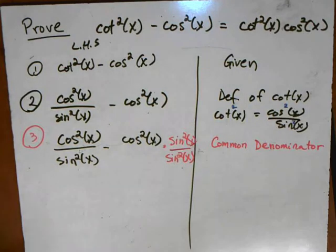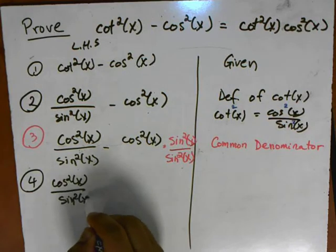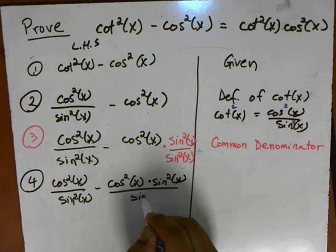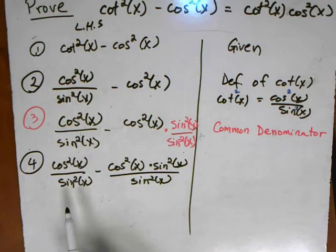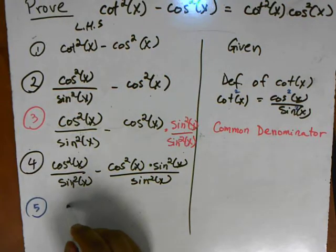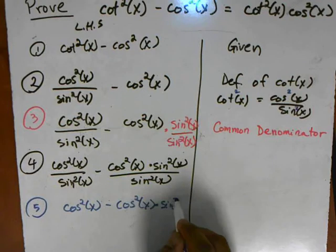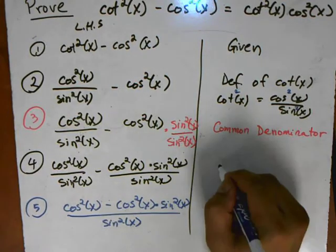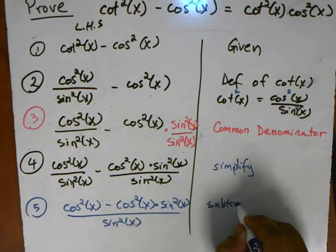This is also very similar to multiplying by one, because sine squared over sine squared equals one. So I'm going to combine everything together. Now I have cosine squared x over sine squared x, minus cosine squared times sine squared, all of it over sine squared. Since now I have everything with the same denominator, I can combine them together to make one fraction. Now I have cosine squared minus cosine squared sine squared, all divided by sine squared.